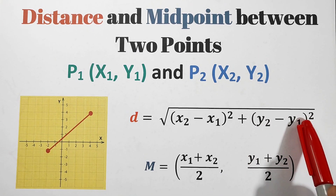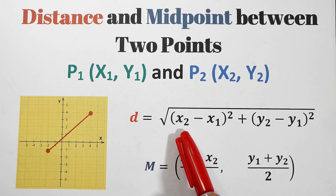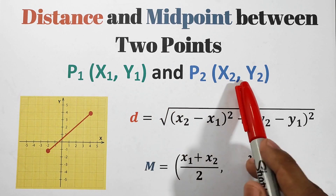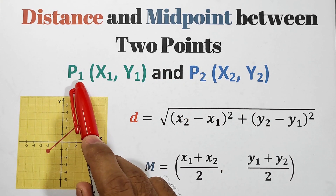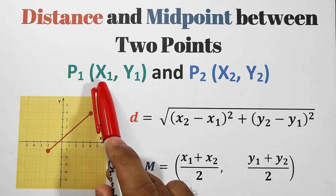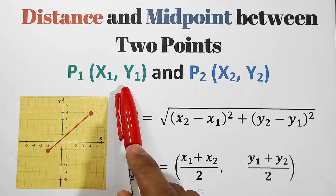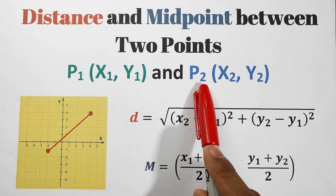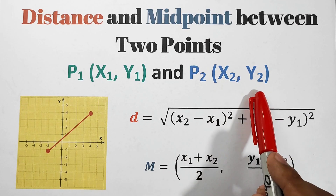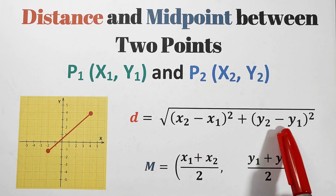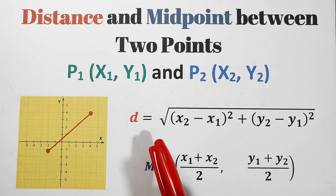So why do we need to use x_sub2 and x_sub1? Since we have two points, we have the first point with the first value of x and the first value of y, and for p_sub2 we have the second value of x and second value of y. The distance formula is derived from the Pythagorean theorem.